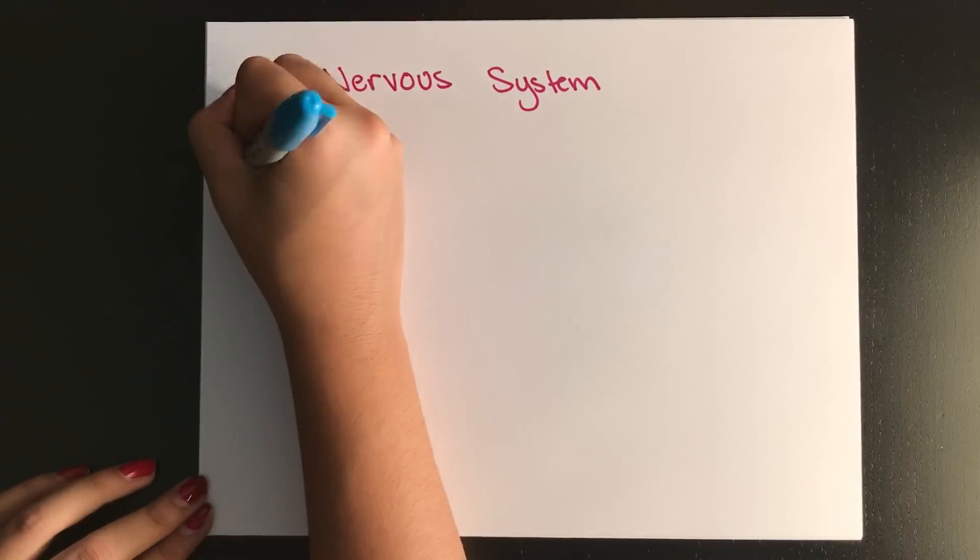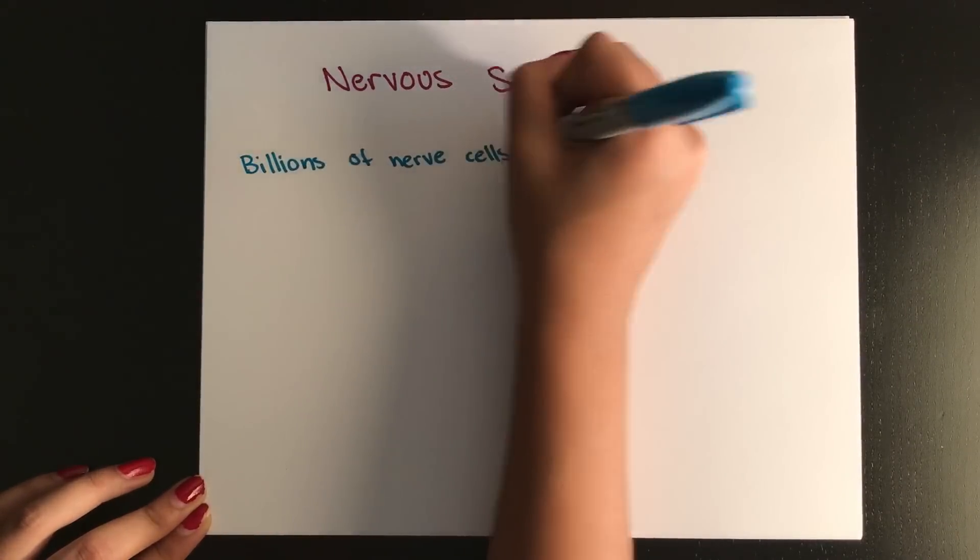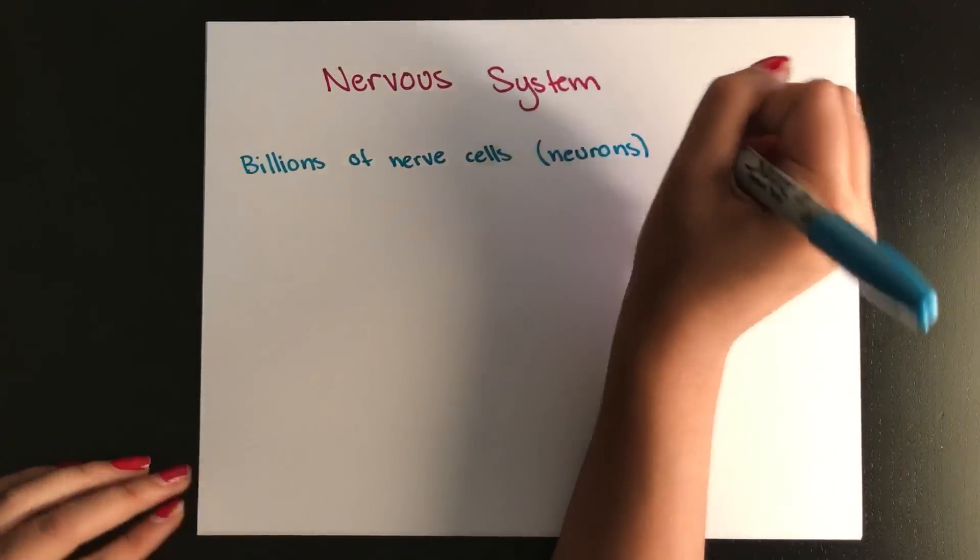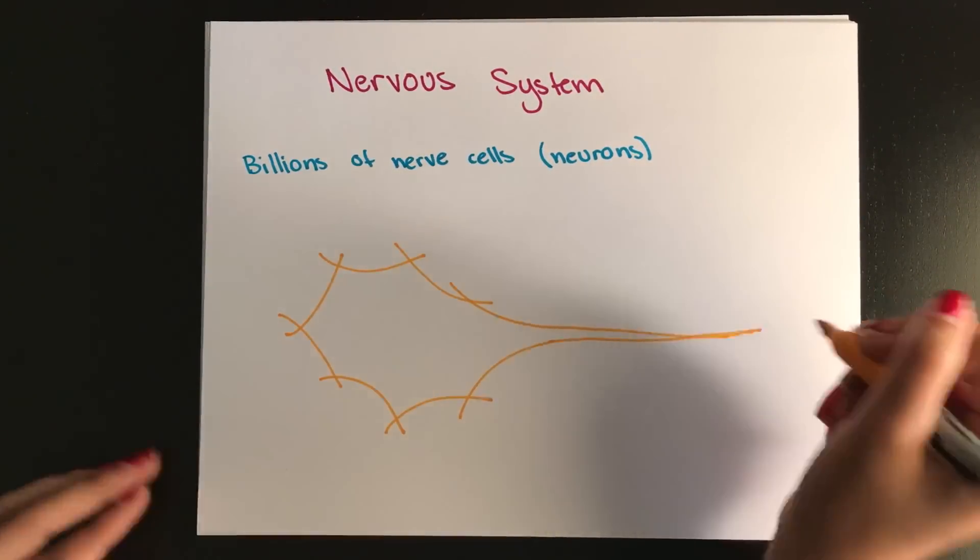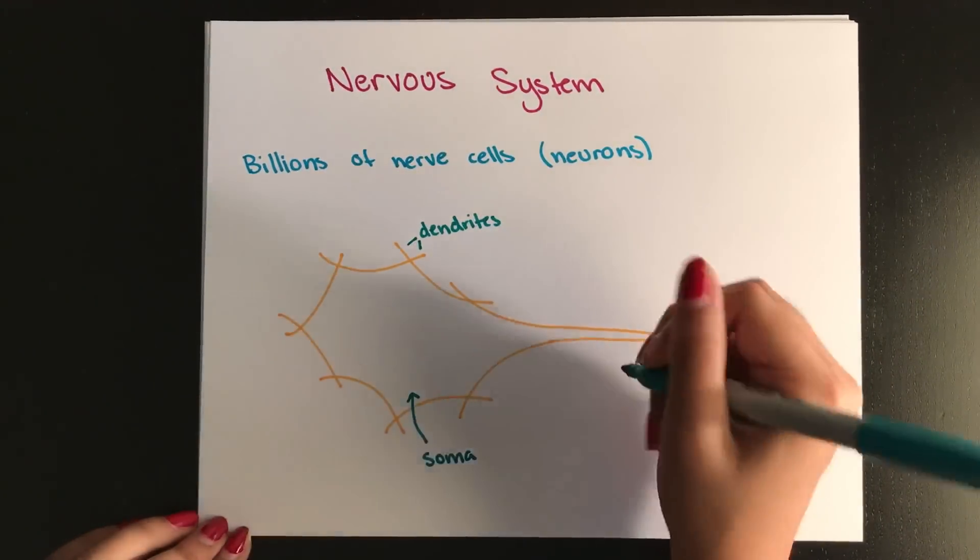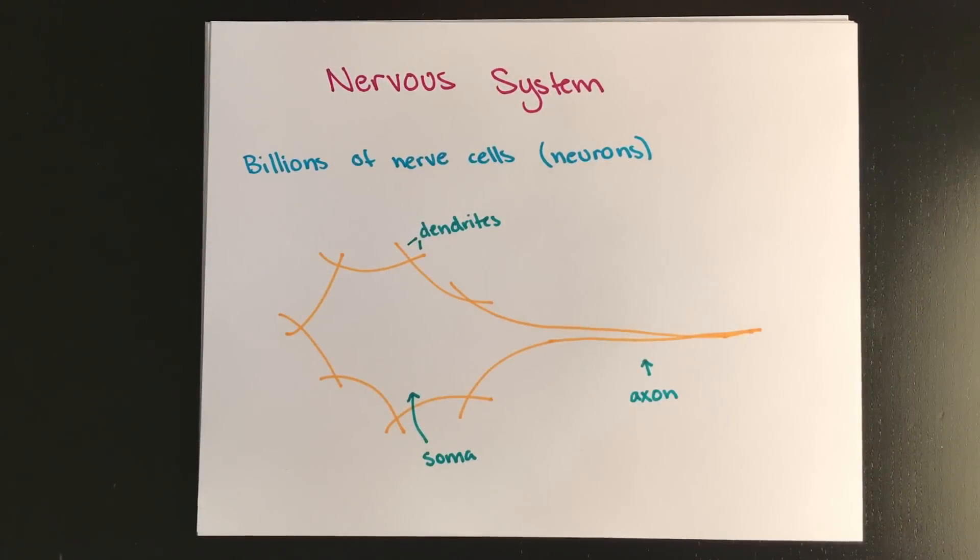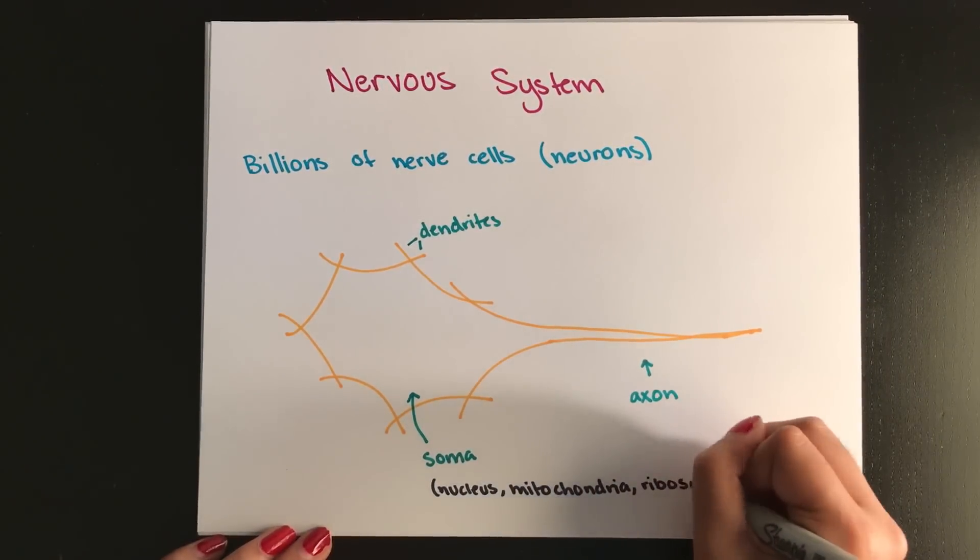We're going to start with the nervous system, which consists of billions of nerve cells called neurons. They're specialized and they carry impulses, so this is not a typical cell. Although these don't look like typical cells, they have a cell body, which is also called a soma, but it contains your normal organelles. So your nucleus, your ribosomes, your mitochondria, and a bunch of other things.